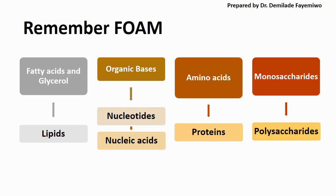So for example, fatty acids and glycerol make up lipids, which is what we will be covering today. Organic bases and nucleotides make up nucleic acids. Amino acids, when chained together, make up proteins. And monosaccharides, when added together, make up polysaccharides. For this chapter, we are not studying nucleic acids, but it's important to have this foundational understanding before we get to the chapter where we do study them.